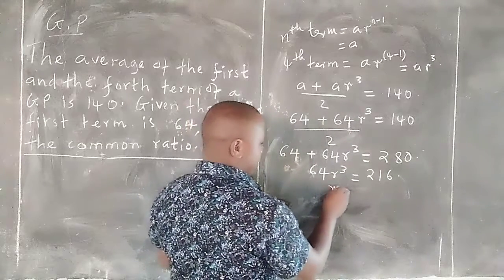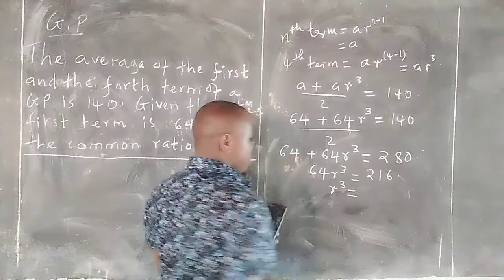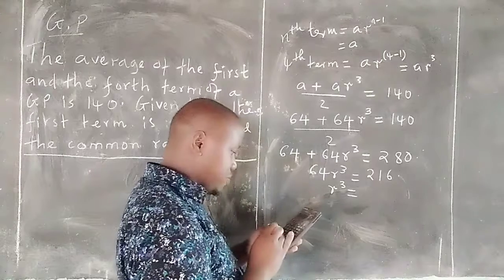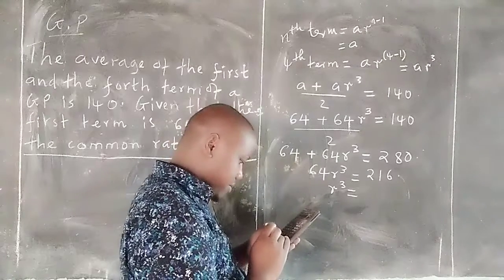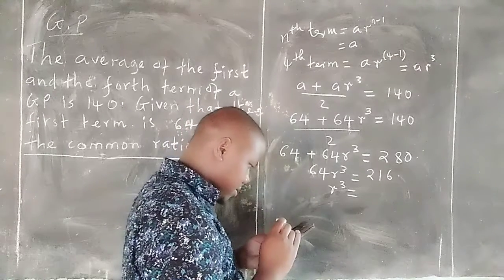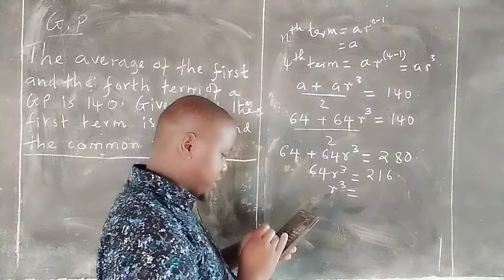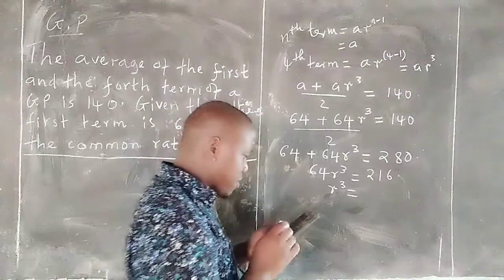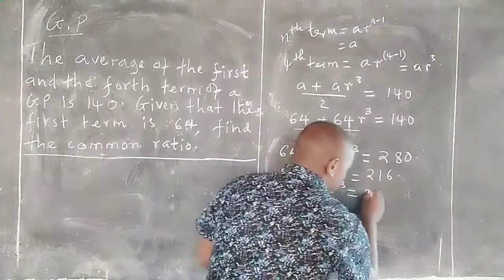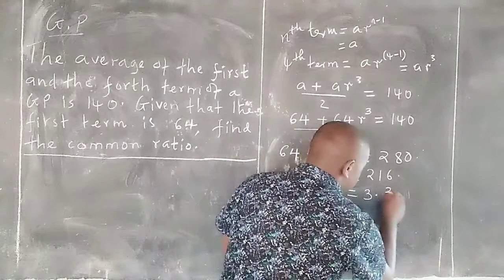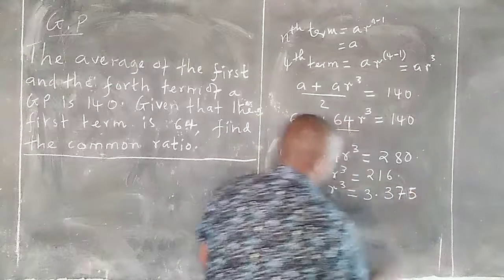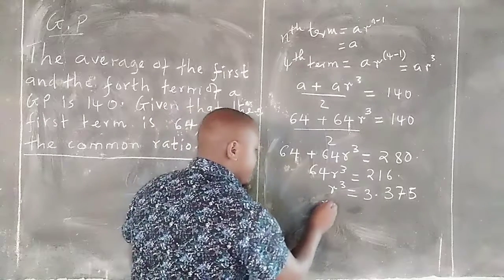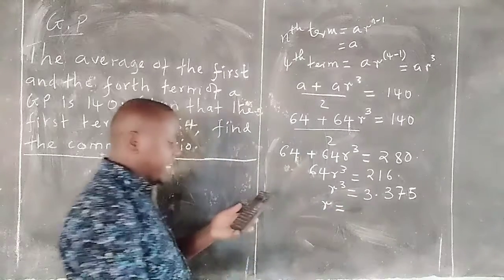We can divide by 64 through to remain with r cubed. When we take 216 and we divide with 64, we remain with 3.375.